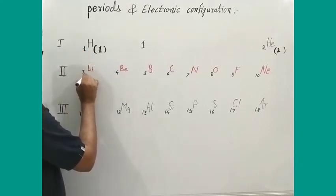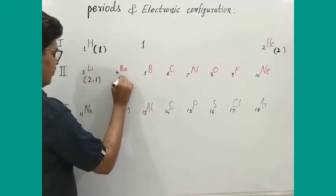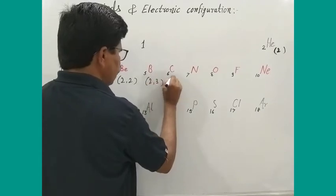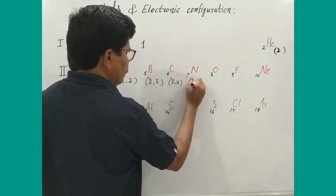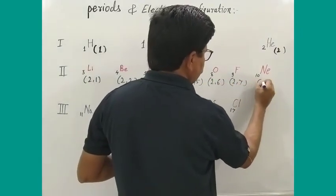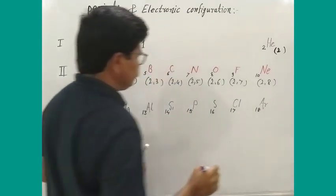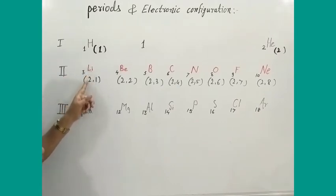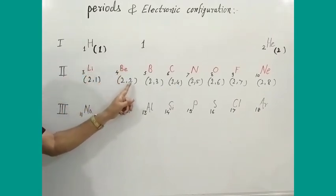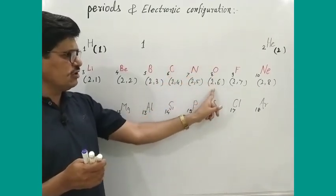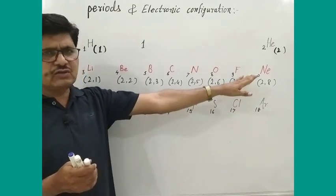The electronic configurations of the second period elements are: lithium is 2,1; beryllium is 2,2; boron is 2,3; carbon is 2,4; nitrogen is 2,5; oxygen is 2,6; fluorine is 2,7; and neon is 2,8.